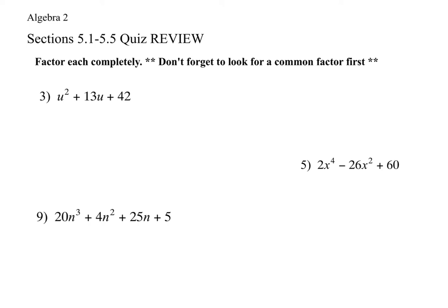The first section is just factoring — you're not solving anything, just factoring. You don't have to set anything equal to zero; you're literally just finding common factors or breaking expressions up into binomials. The first thing you always want to do is don't forget to look for the common factor first. For all of these, you're going to look and ask: is anything in common that I can take out first?